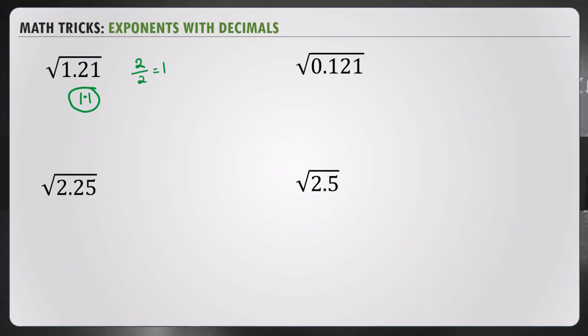Square root of 225 is 15. And we have 2 decimal places divided by 2 should give me 1. So, your answer is 1.5.